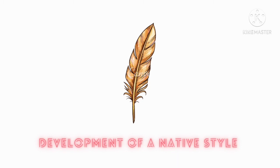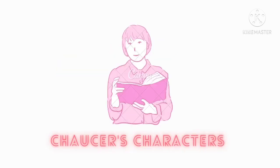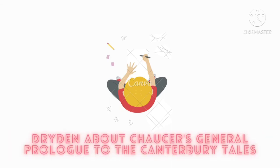William Blake said, 'They are the physiognomies and lineaments of universal human life beyond which nature never steps.' Who are they? Chaucer's characters. 'Here is God's plenty.' Who said this? Dryden, about Chaucer's General Prologue to the Canterbury Tales.